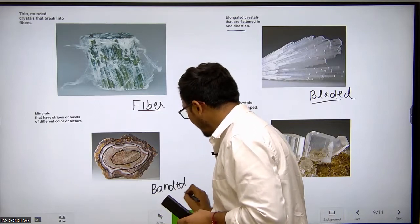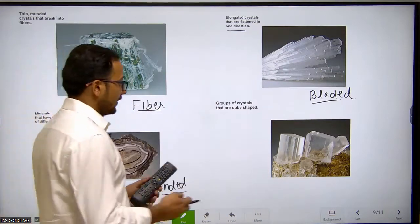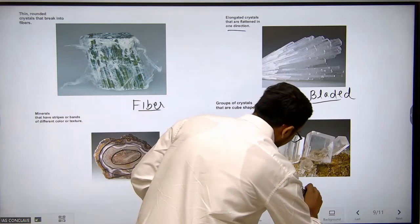The fourth one is a group of crystals that have a cubical shape. These are called cubic crystals.